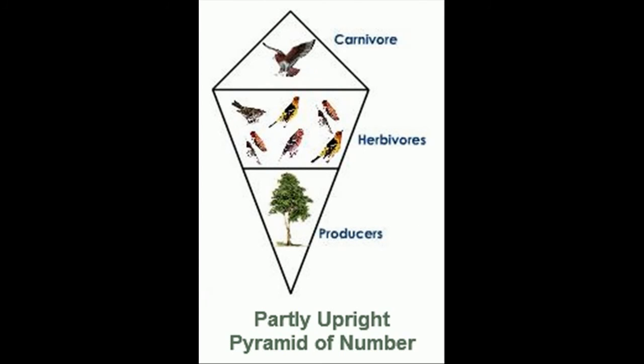The Partly Upright Pyramid of Numbers is often seen in forests. This is when the number of producers are lesser in number, and support a greater number of herbivores, which in turn support a fewer number of carnivores.